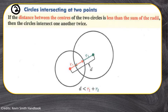Case number two: circles intersecting at two points. How do you deduce if intersection is occurring at two points? That is when the distance between the two circles is actually less than the sum of their radii. If you find that the distance between the two circles is less than the sum of their radii, then the circles intersect each other twice.